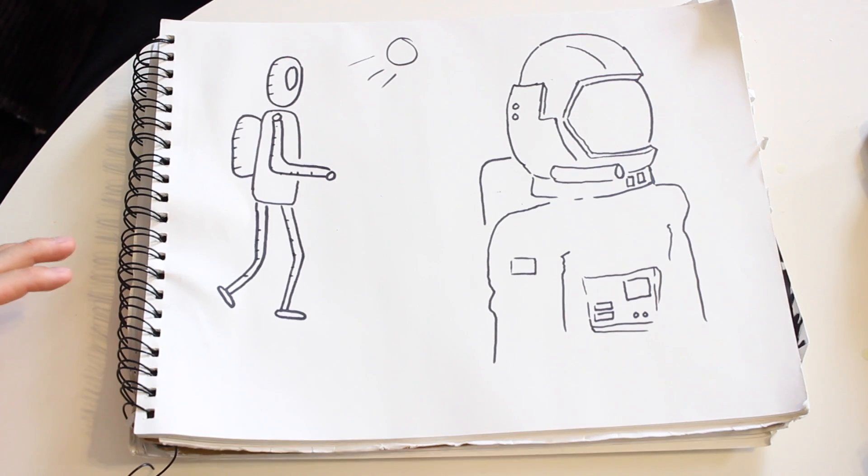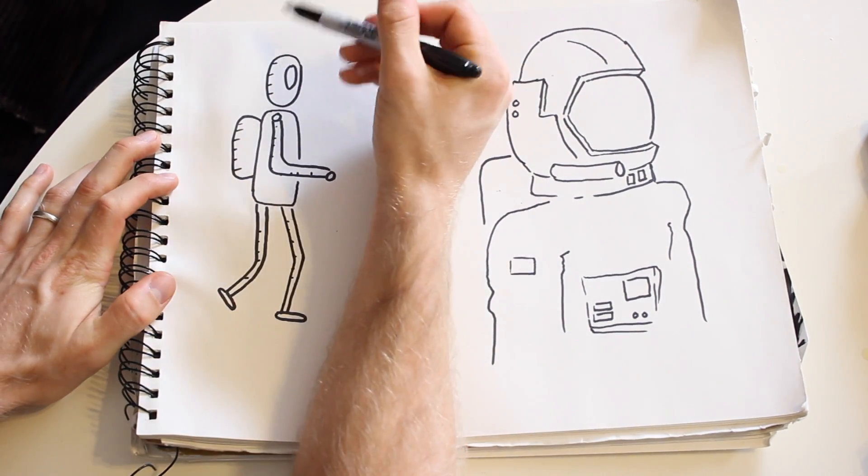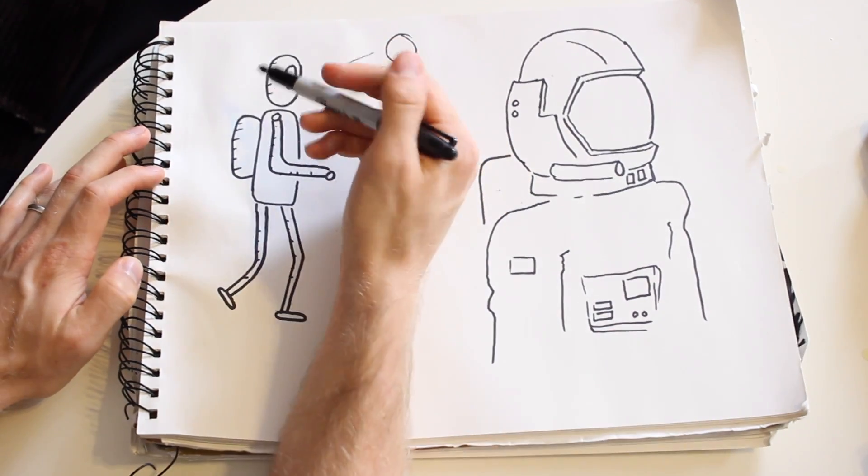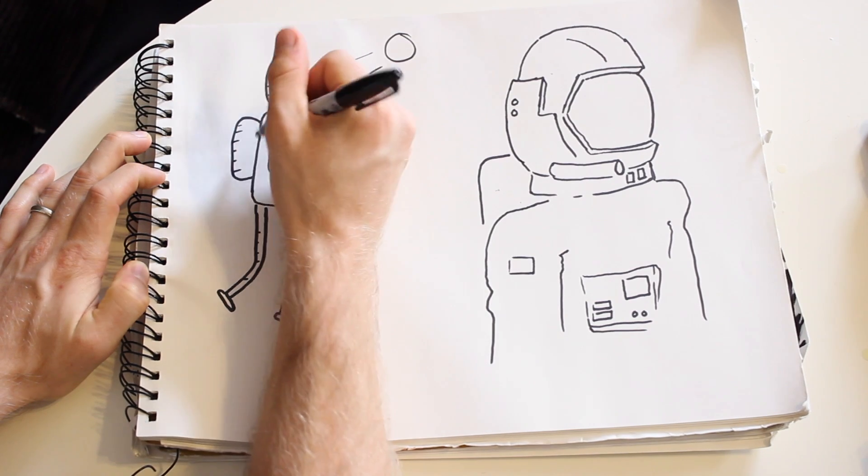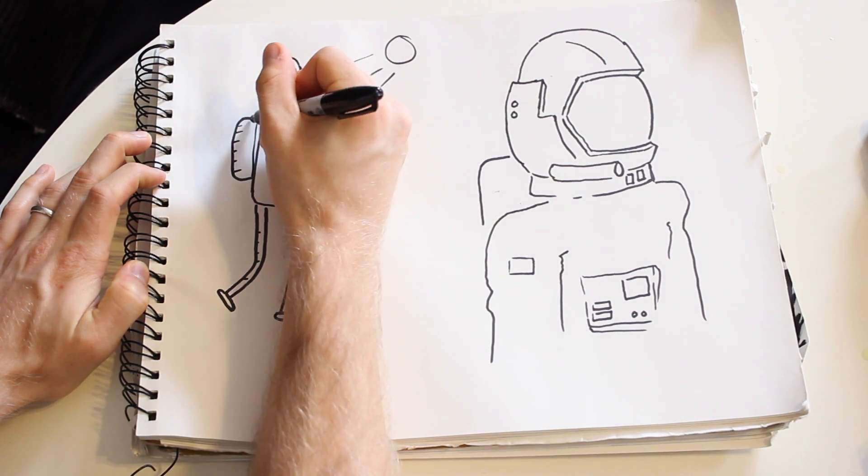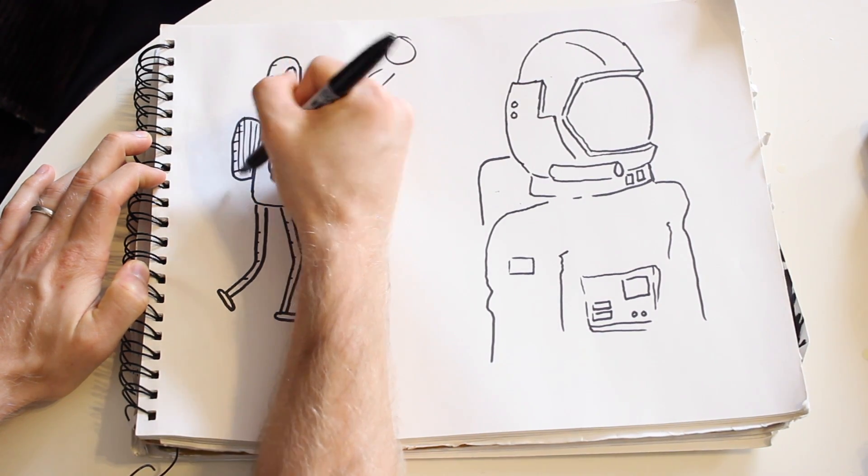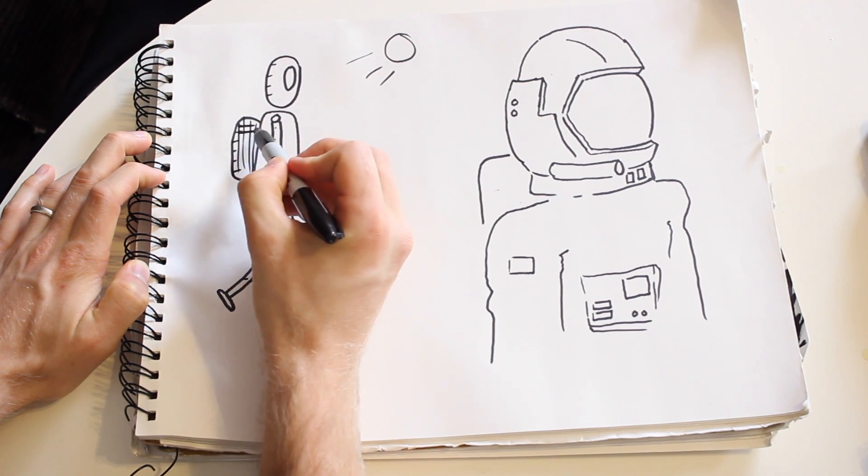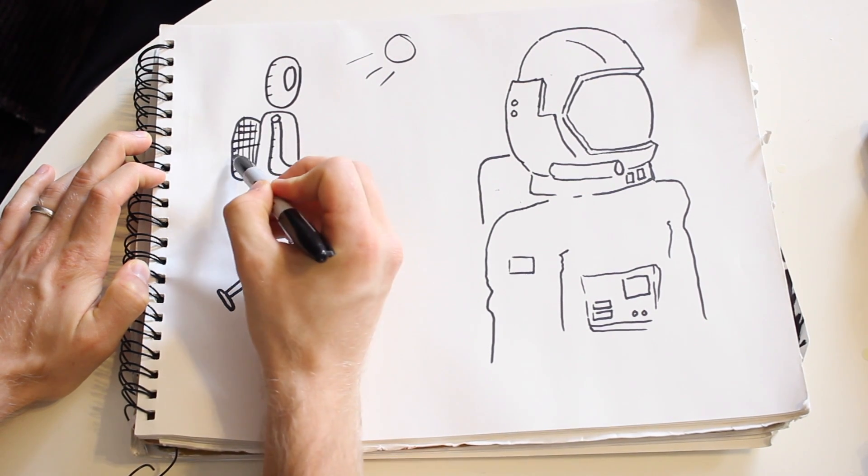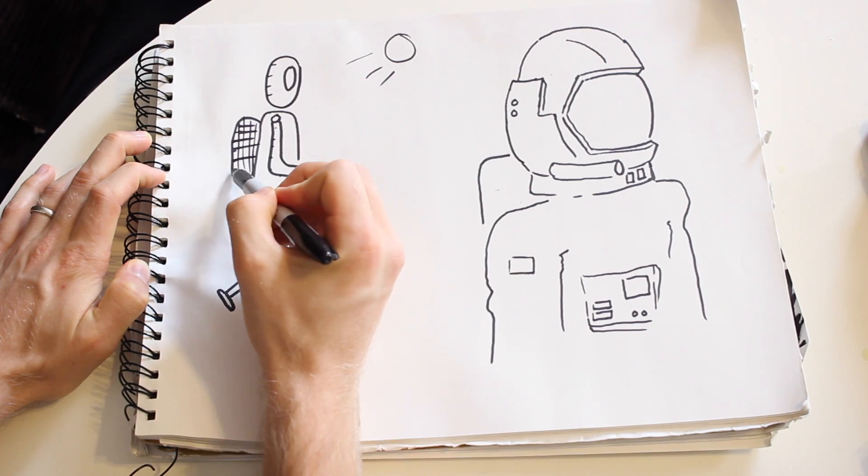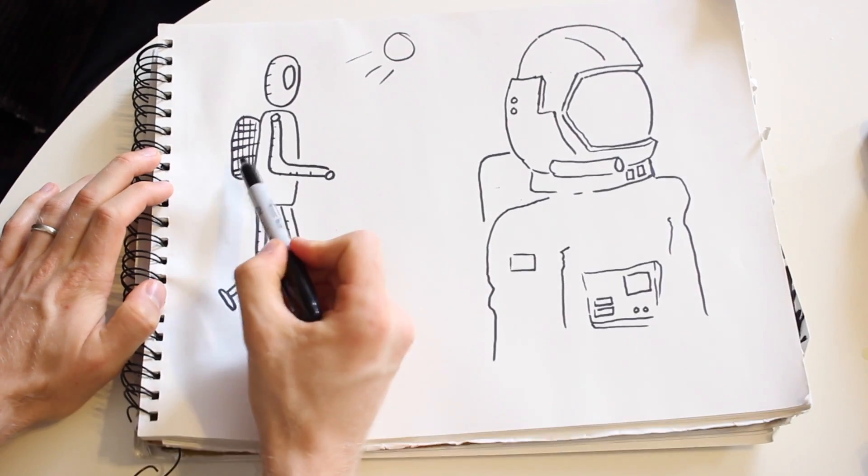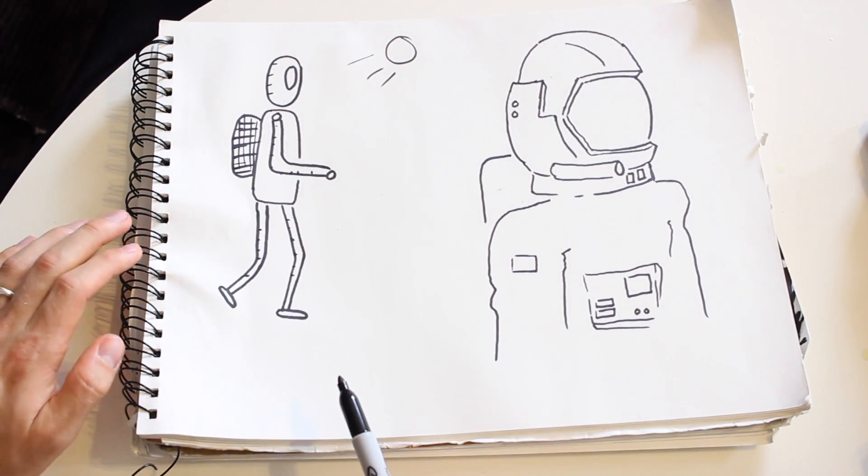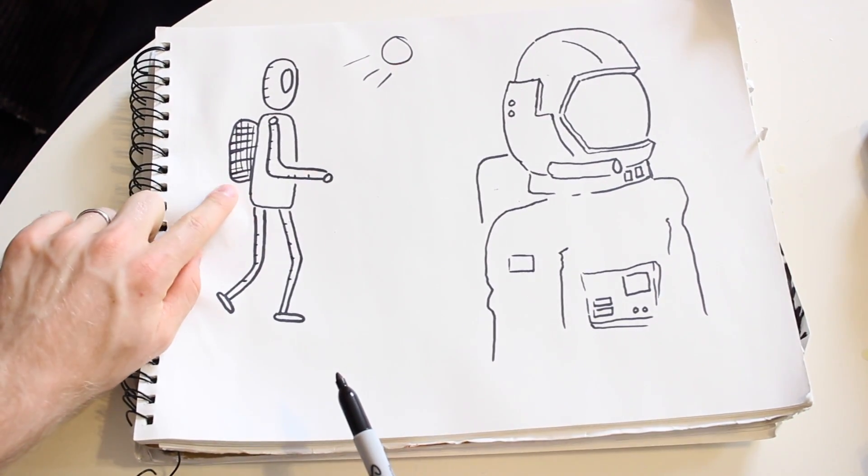If you wanted to make parts of the clothing darker than other parts, you could—for instance, if I wanted to make the backpack darker than the outfit the character is wearing, I could add some vertical lines. You could add some horizontal lines, and now the backpack almost looks like it's a darker shade than the rest of the outfit.